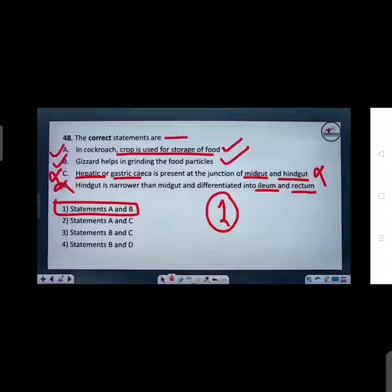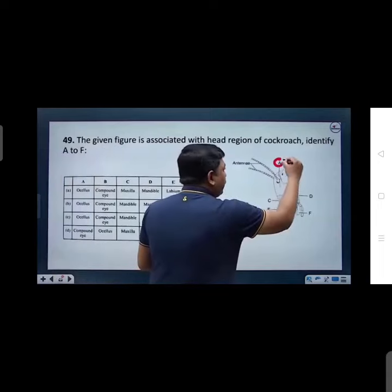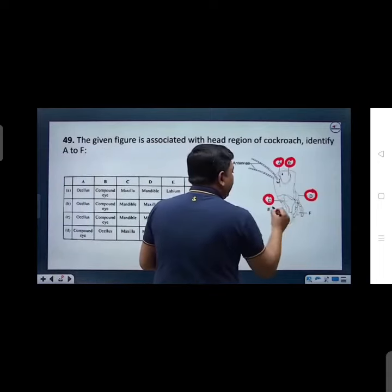Next. Now this is a diagram-based question commandos. I will explain to you. A, B, C, D, E, F. Head region.